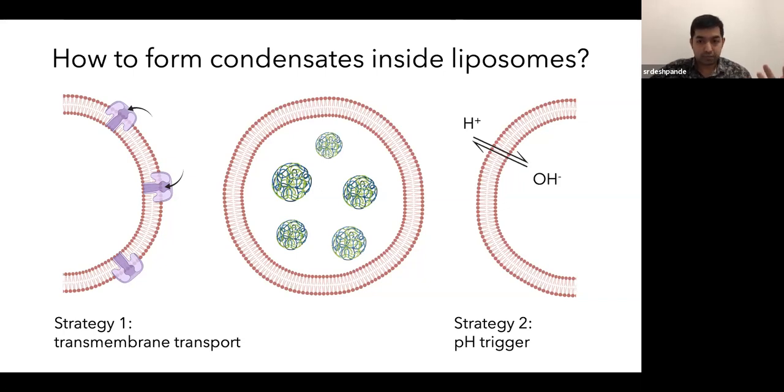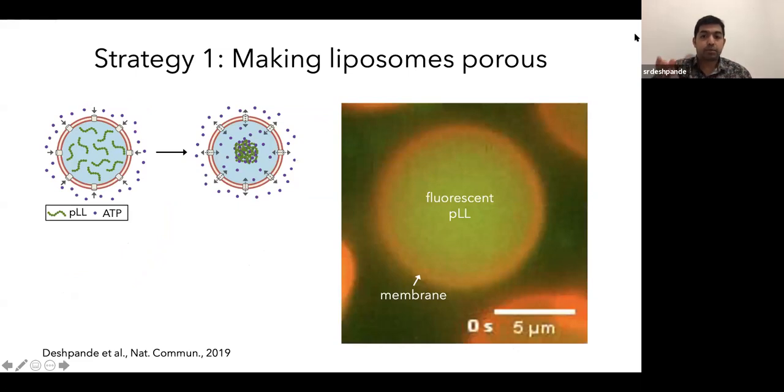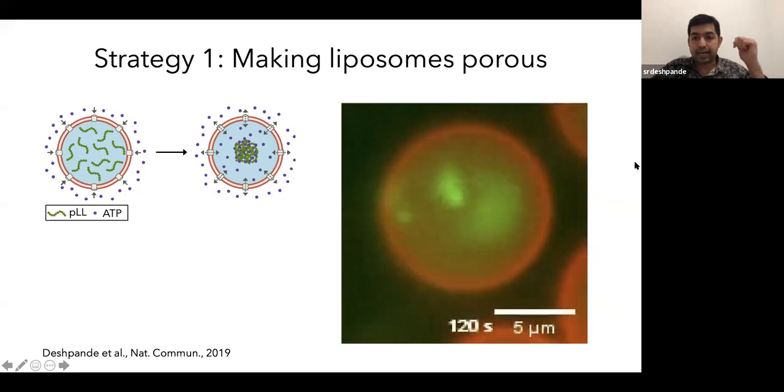Making liposomes porous. So as I said before, what we did was encapsulated one component inside our liposome, here polylysine, the large component. And we had alpha-hemolysin pores at the membrane. And ATP, which is a small enough molecule to go through these pores, was added outside. And the idea was, once ATP goes inside, it can form a condensate. And this is what the video is going to show. The polylysine is fluorescently labeled and is green. The membrane is red. And once I start the video and add ATP, see what happens. You get this beautiful condensation inside the liposomes.